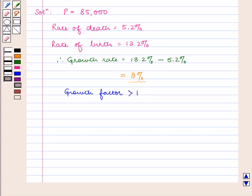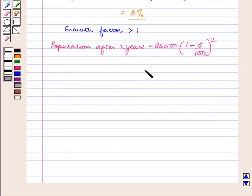Hence by using the compound interest law, the population of the town after 2 years equals 85,000 into 1 plus 8 upon 100 raised to power 2.